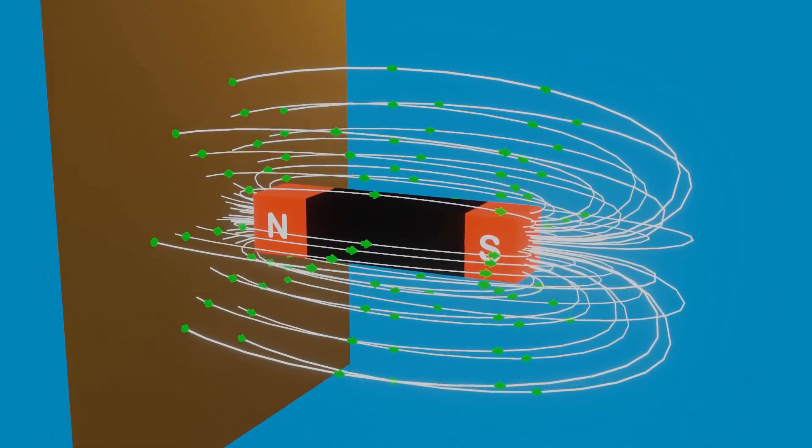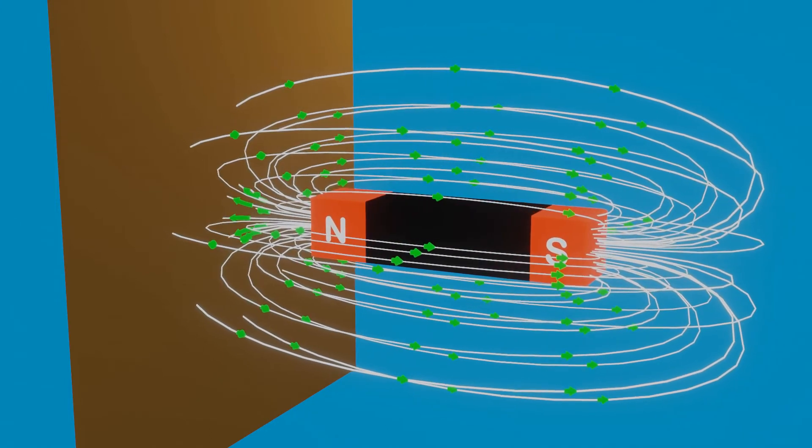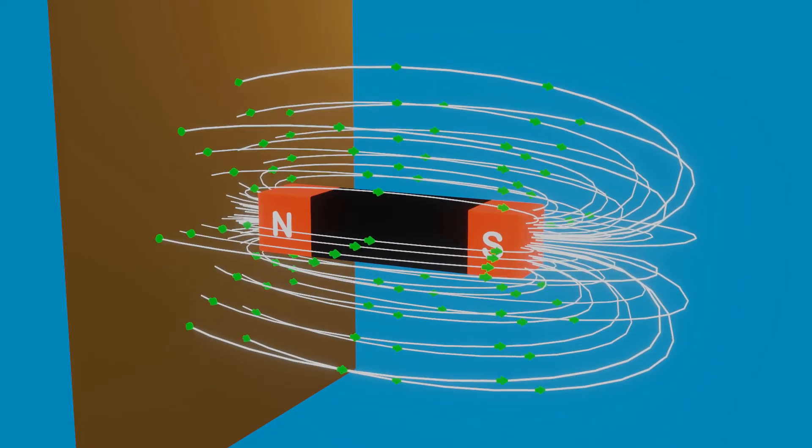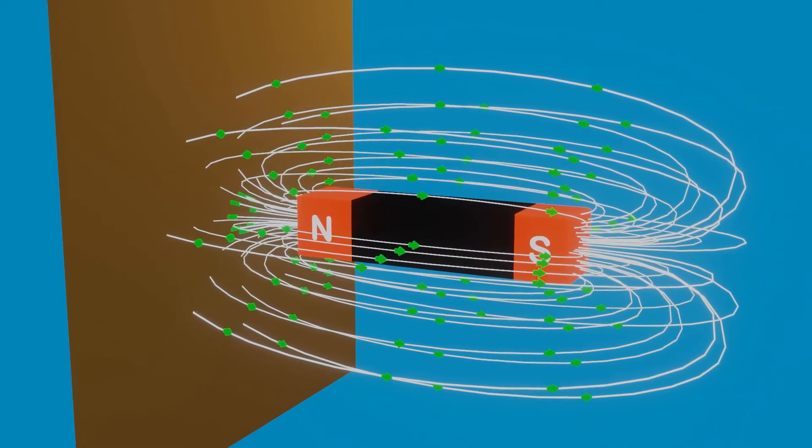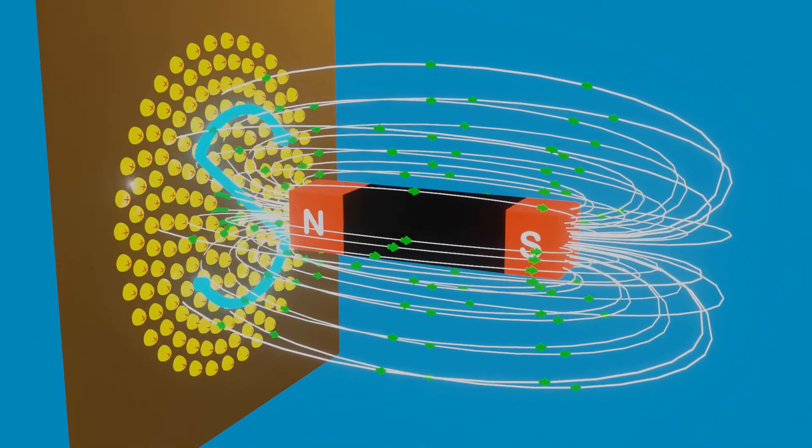Similar thing happens when we move the bar magnet away from the plate. Due to motion of the magnet, magnetic flux passing through the conducting plate changes. Now, to oppose change in magnetic flux, eddy current starts flowing in a clockwise direction.